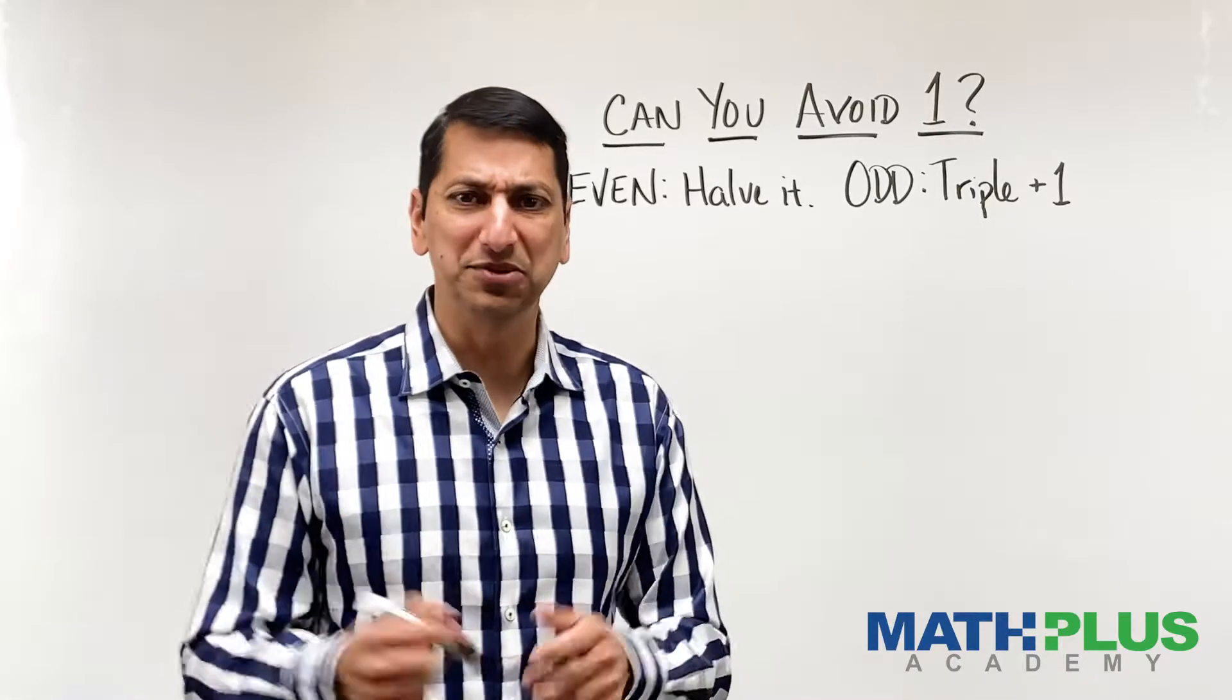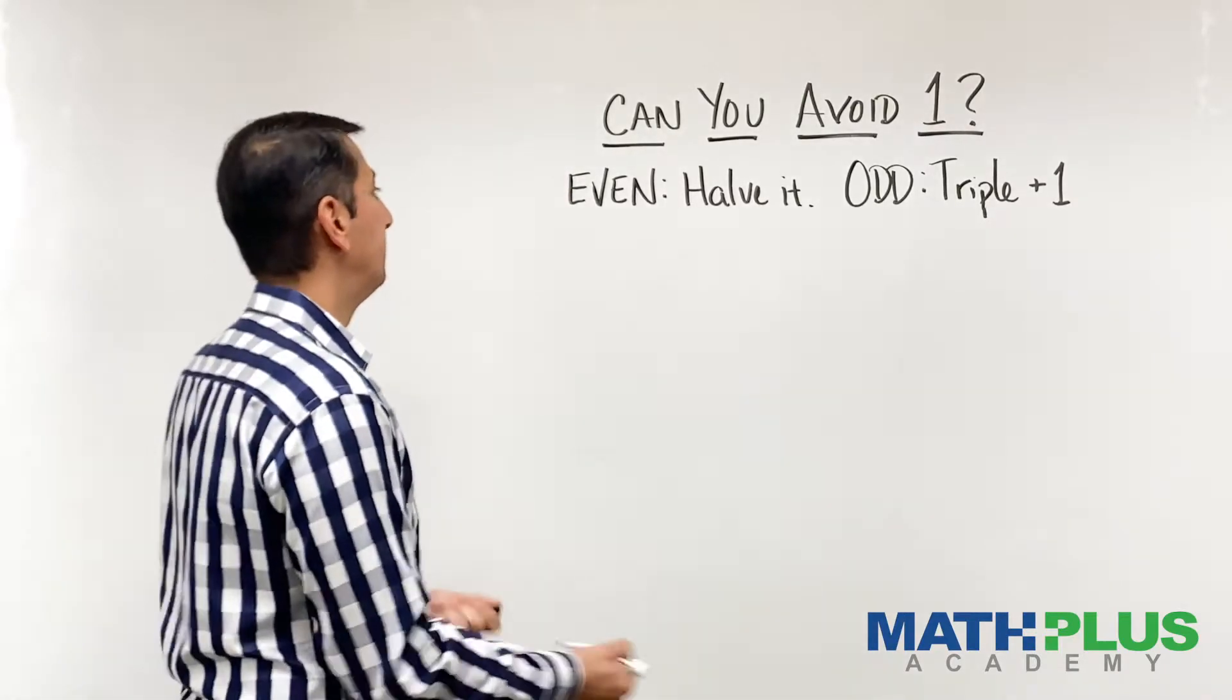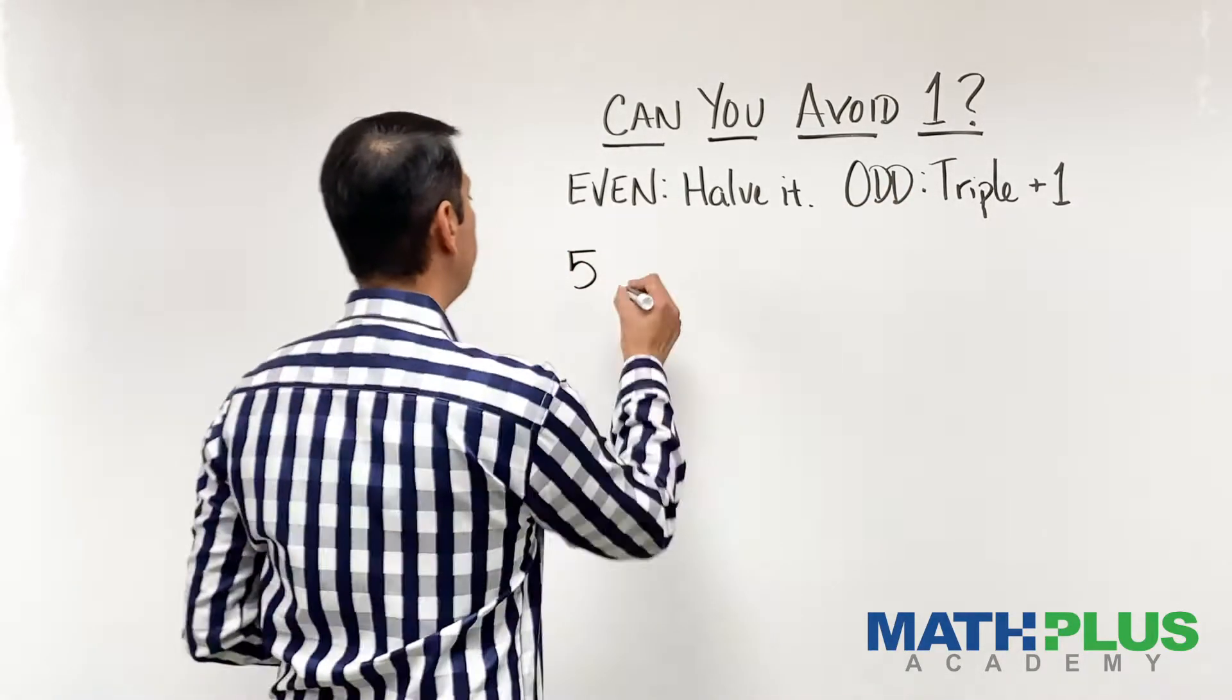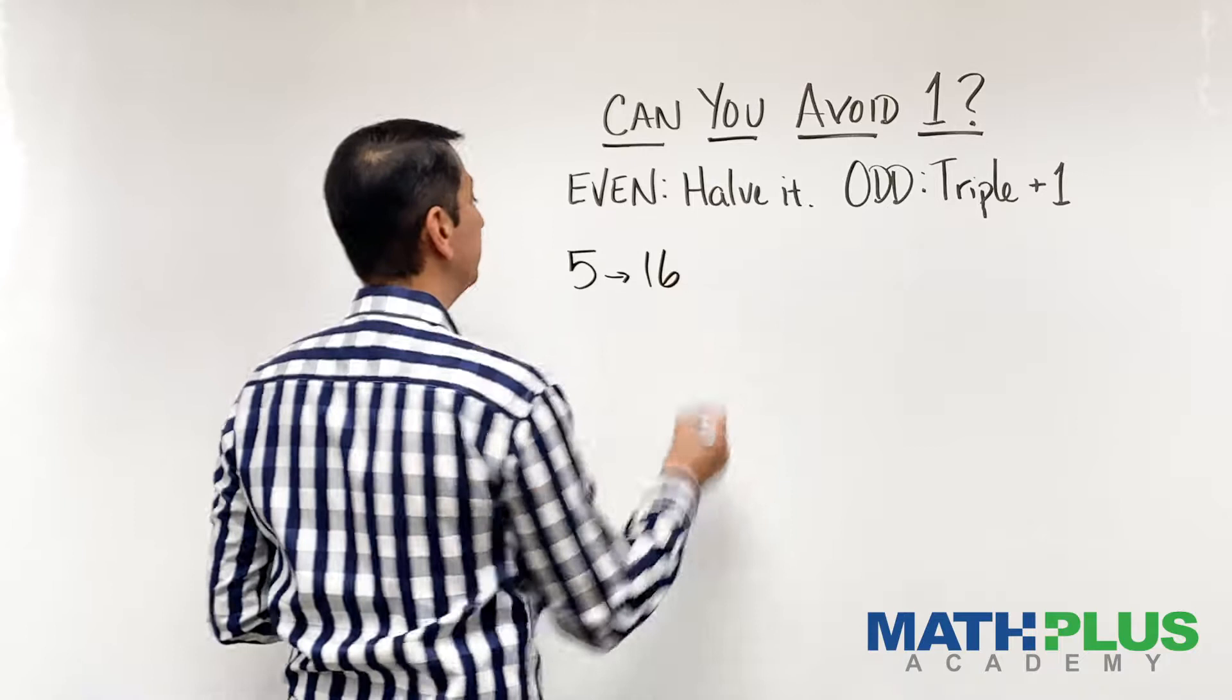So let's do one example so you can make sense of what I'm trying to say. Imagine we start with the number five. Well, five is odd, so I'm going to triple it and add one. That's going to bring me to 16.